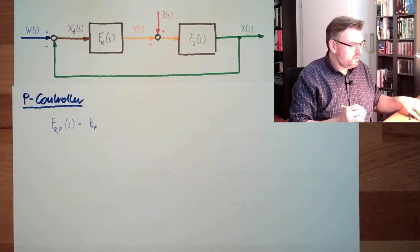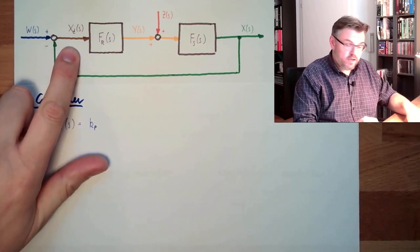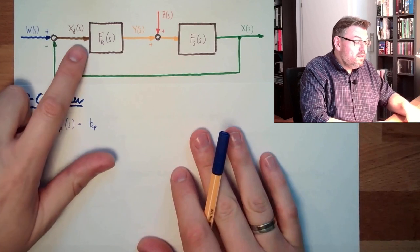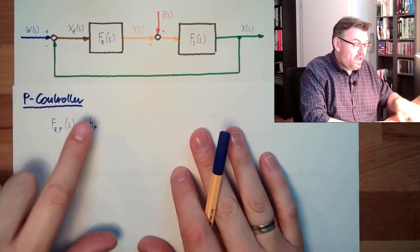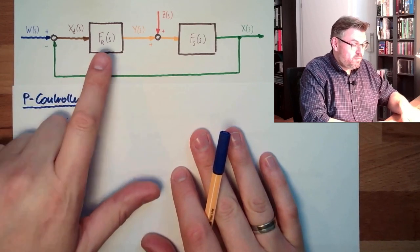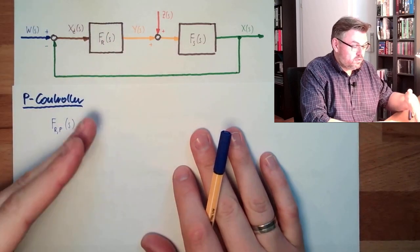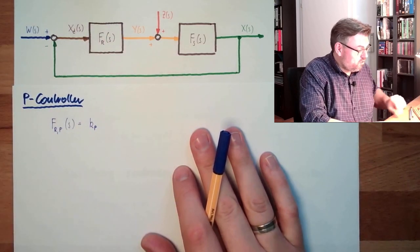So what this means? If there's a control deviation here, this control deviation will have a certain gain factor Kp, and this is the correcting variable. So the correcting variable depends on the control deviation.